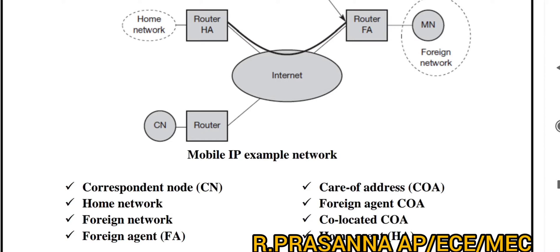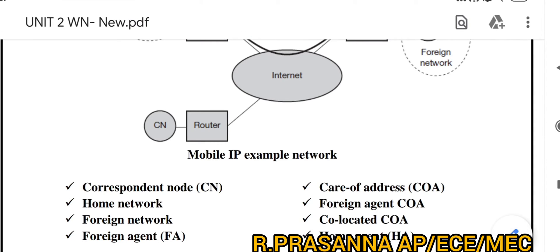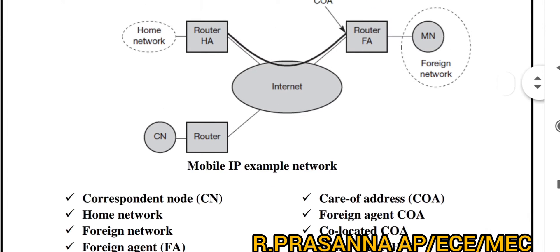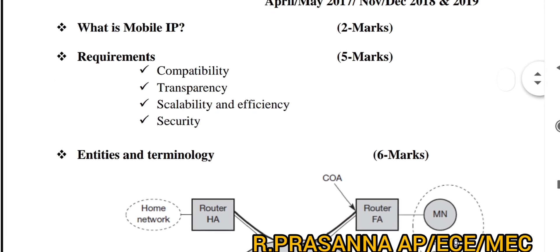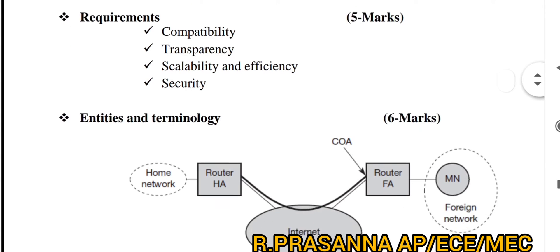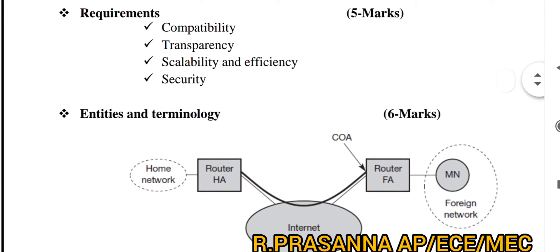The theme is that you can explain each entity for 2 marks — Home Agent and the other entities each for 2 marks. Mark split-up: Mobile IP definition is 2 marks, Requirements are 5 marks, Entities and Terminologies are 6 marks. Total: 13 marks.